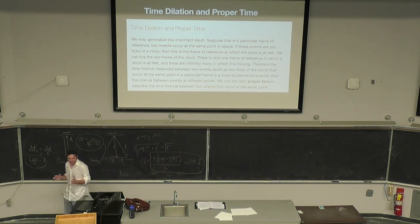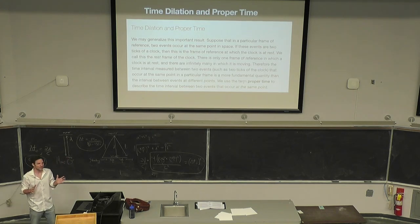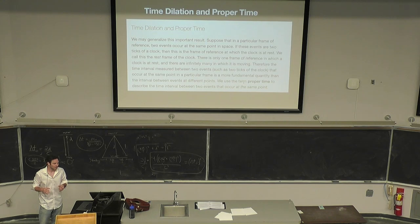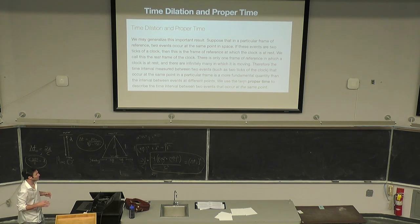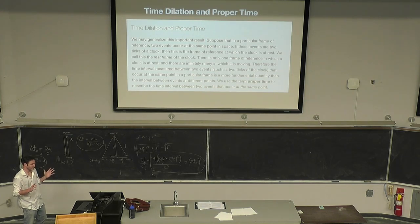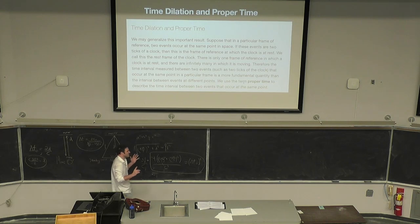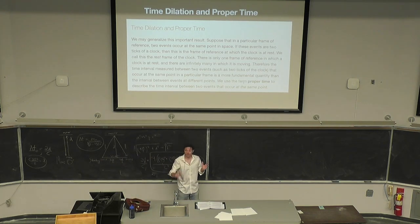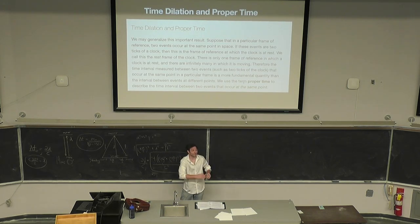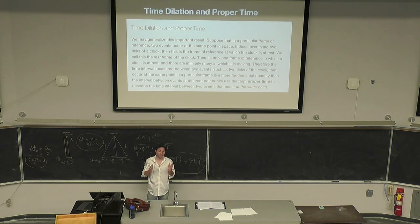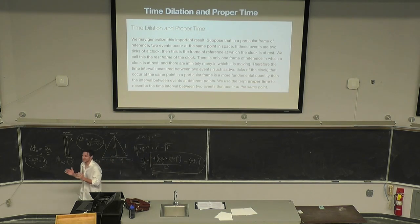Now we have a clear definition. We use the term proper time to describe the time interval between two events that occur at the same point. The light comes up and strikes again, occurring at the same point in Mavis' frame of reference — so in her frame that event occurs at the same point, and thus it's the proper time. Not in Stanley's — the light ray does not come back to the same starting point in his frame. She's moved some distance U delta T in that time, so he does not have the proper time.